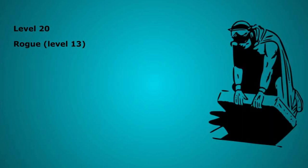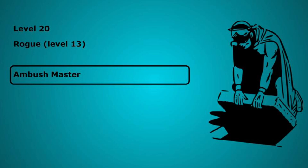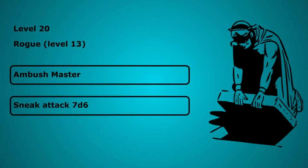Level 20 we take our 13th level in Rogue. You get the ambush master feature giving you advantage on initiative rolls. In addition the first creature you hit on the opening round of combat can be attacked with advantage by everyone until the start of your next turn. 13th level Rogues also increase their sneak attack damage to 7d6.